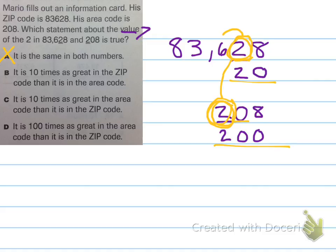B, it is 10 times as great in the zip code than it is in the area code. So, they're saying this is 10 times greater in the zip code than the area code. Well, that's the exact opposite of what I wanted to say. This is 10 times greater. So, that can't be right.